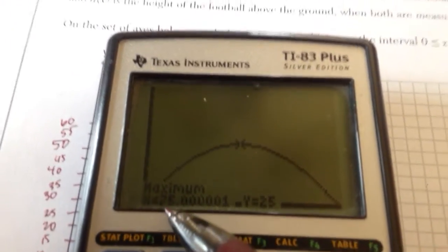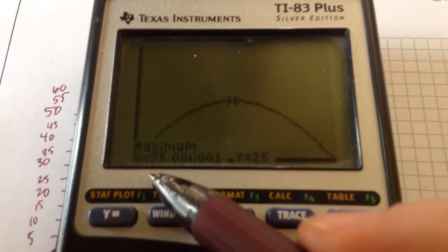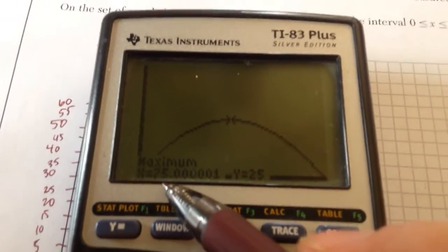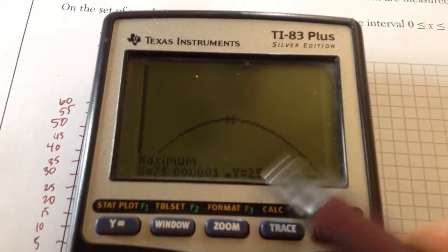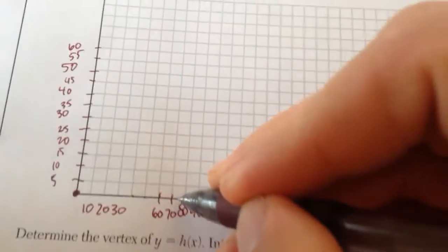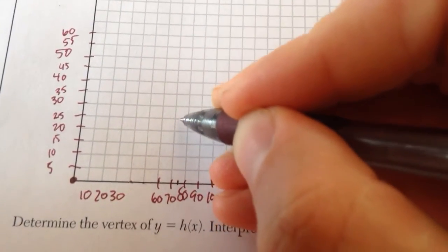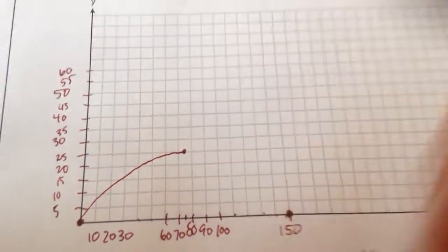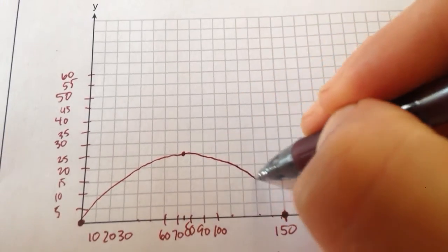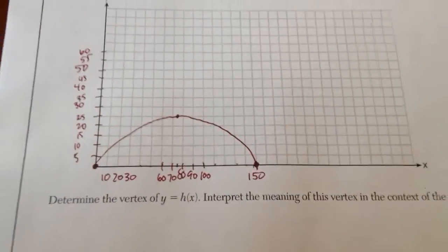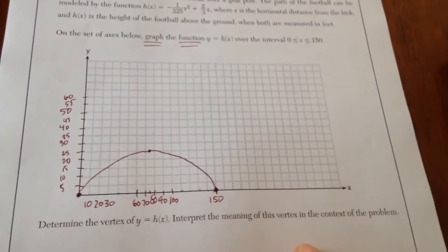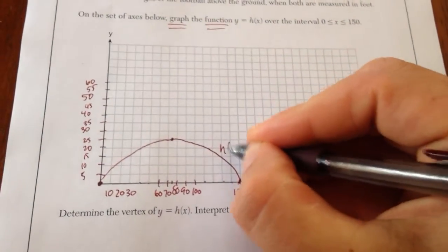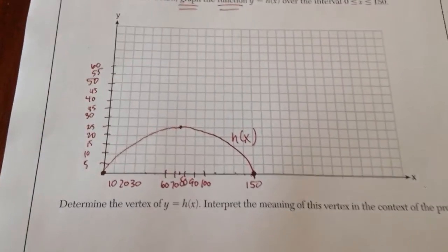So at 75 feet away, it's going to be 25 feet in the air. So at 75, which is right in here, we're going to go up to 25. And then what I can do for myself is just kind of sketch this parabola. So, this is the function of h of x.